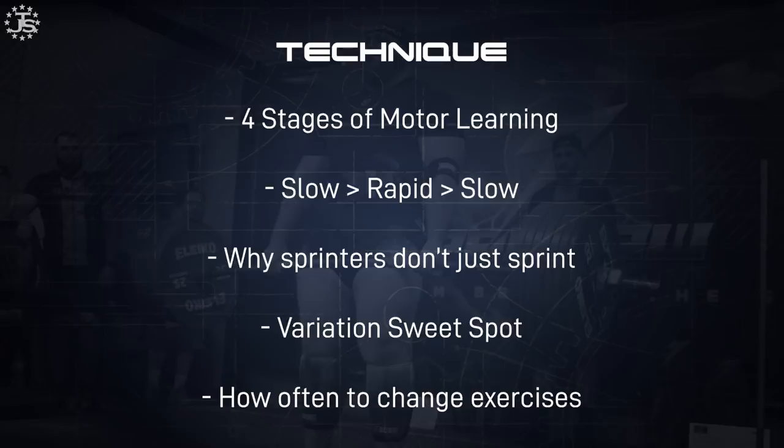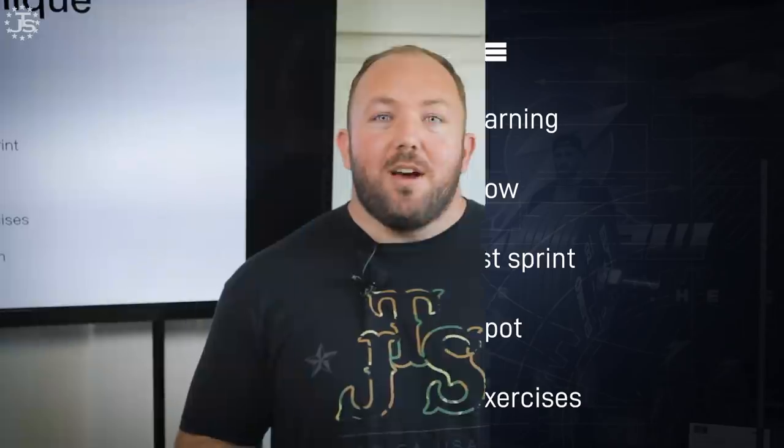Regarding technique development, there are four stages of motor learning. Unconscious incompetence: you're bad at it and don't even know how bad you are. Conscious incompetence: you know you have technical flaws and sometimes fix them, sometimes not. Conscious competence: you can do things correctly but have to think through every step. The goal is unconscious competence, where technique becomes automatic — you can shut your brain off, get under the bar, and just move powerfully. That's how you move the biggest weights.